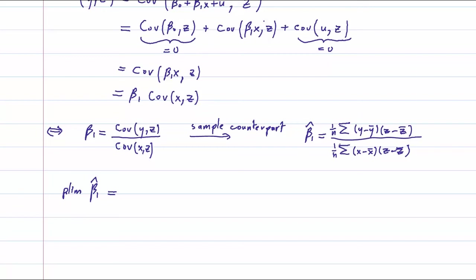And we have the rule for convergence in probability. If we have the top part that converges to something and the bottom part that converges to something different from zero, we can just take the ratio of the convergence point. So this is plim of one over n sum of y minus y bar z minus z bar over one over n sum of x minus x bar z minus z bar.